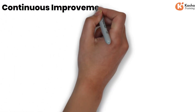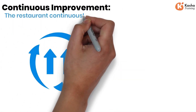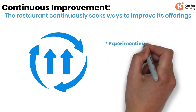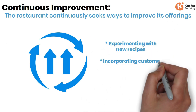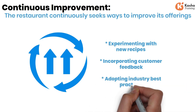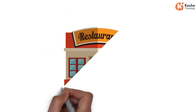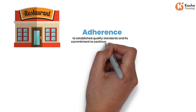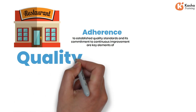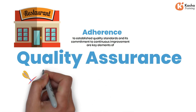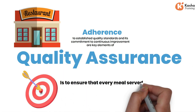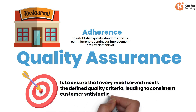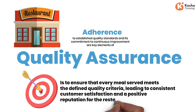Continuous Improvement: the restaurant continuously seeks ways to improve its offerings, which may involve experimenting with new recipes, incorporating customer feedback, or adopting industry best practices. In this example, the restaurant's adherence to established quality standards and its commitment to continuous improvement are key elements of quality assurance. The goal is to ensure that every meal served meets the defined quality criteria, leading to consistent customer satisfaction and a positive reputation for the restaurant.